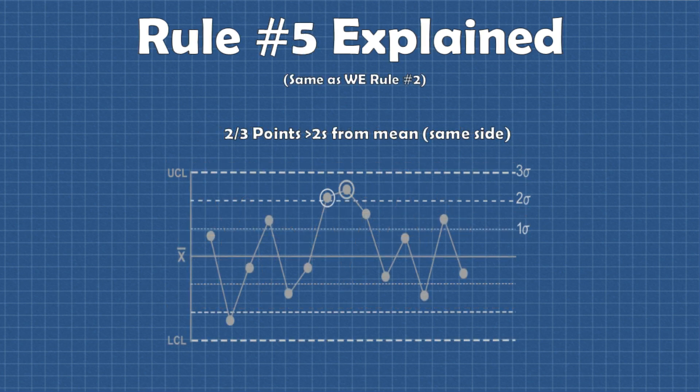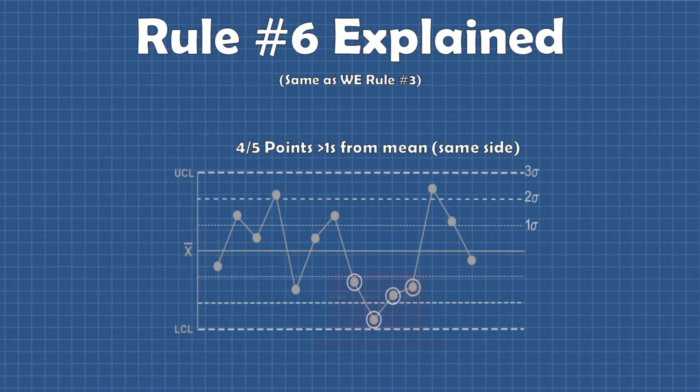The fifth rule as I said is a test for medium process shifts. It can be used in conjunction with rule one to increase chart sensitivity to intermediate shifts. The sixth rule is a test for small process shifts which can be used with rule one and five to increase chart sensitivity even further.